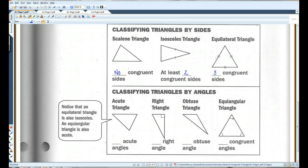When classifying triangles by angles, an acute triangle has three acute angles. All of the angles are acute. A right triangle has one right angle. An obtuse triangle has one obtuse angle. An equiangular triangle has three congruent angles, all congruent angles.